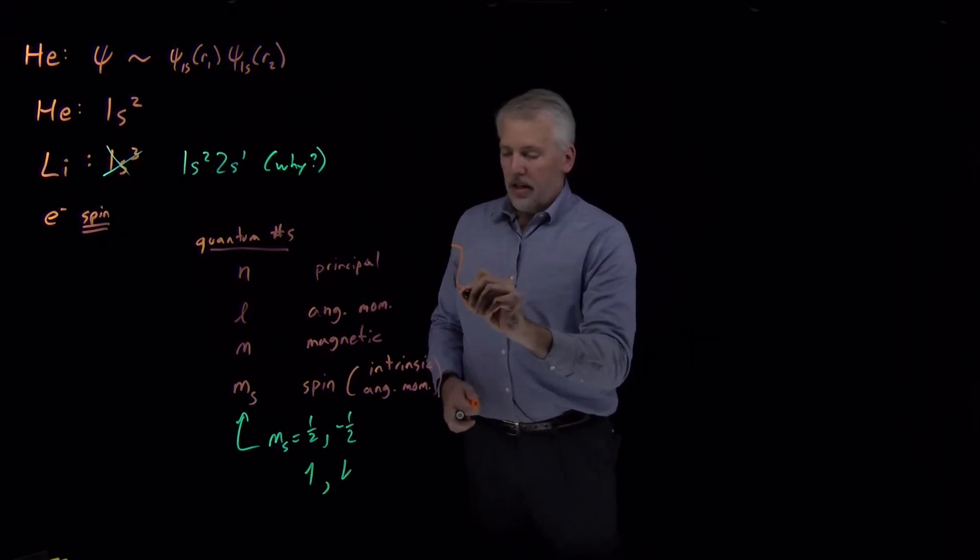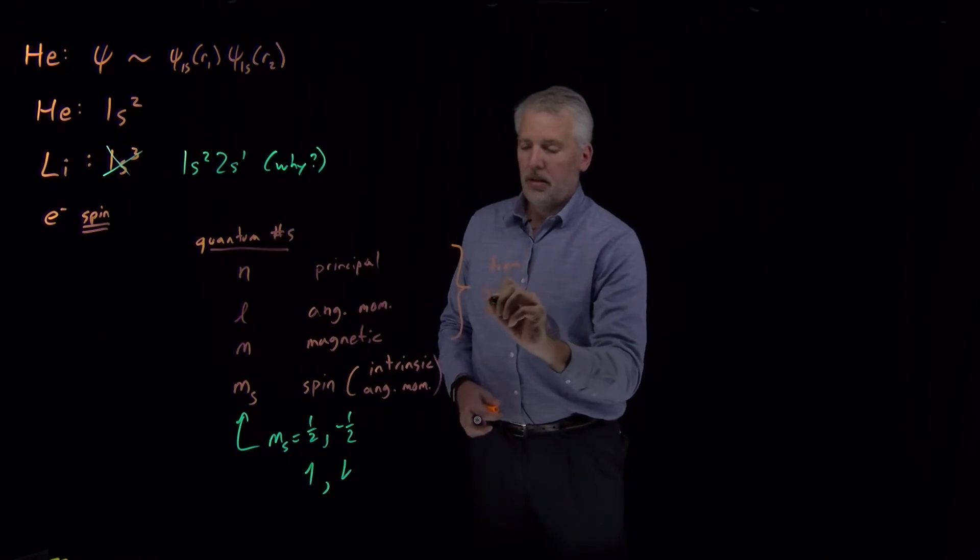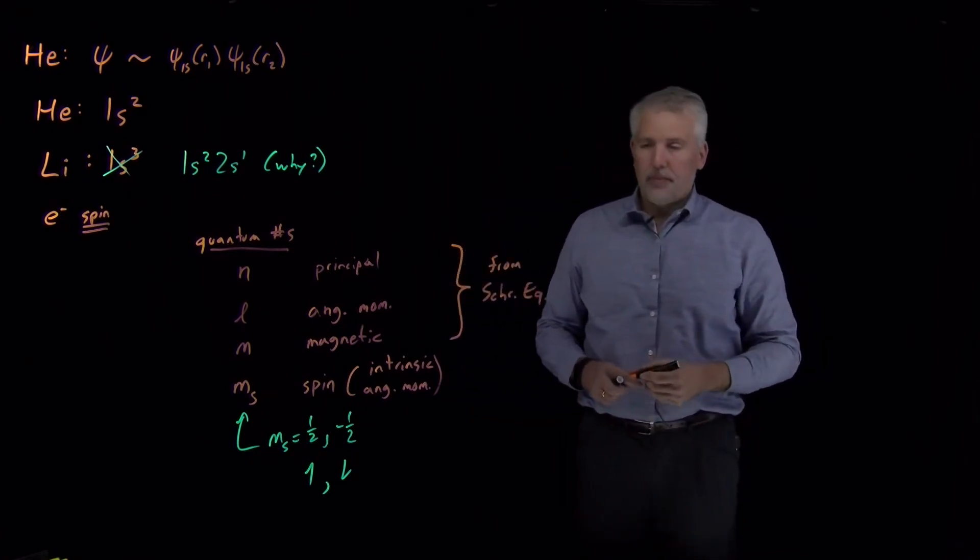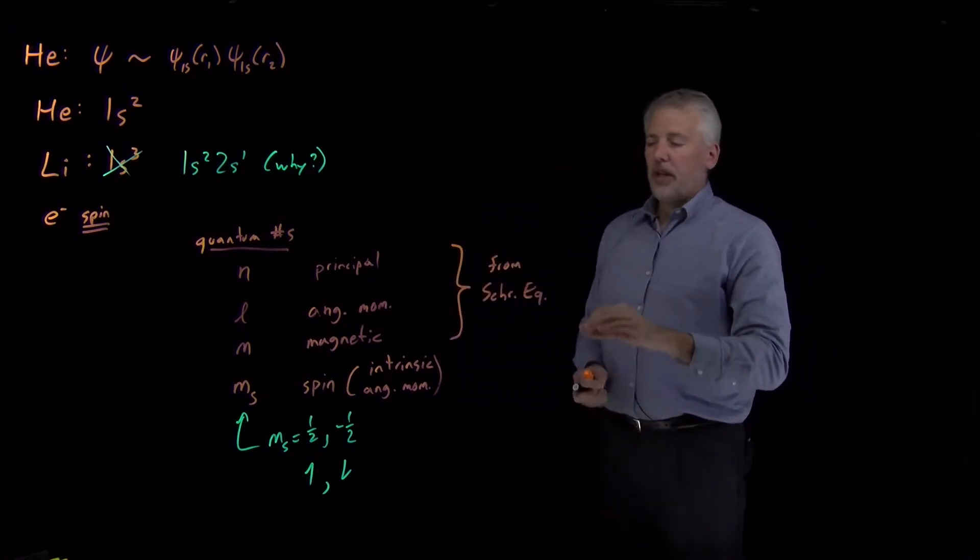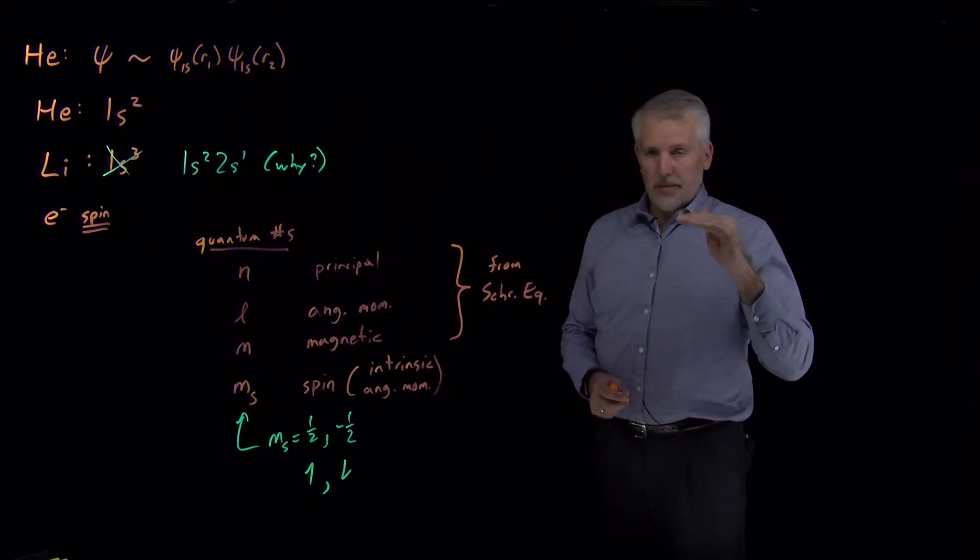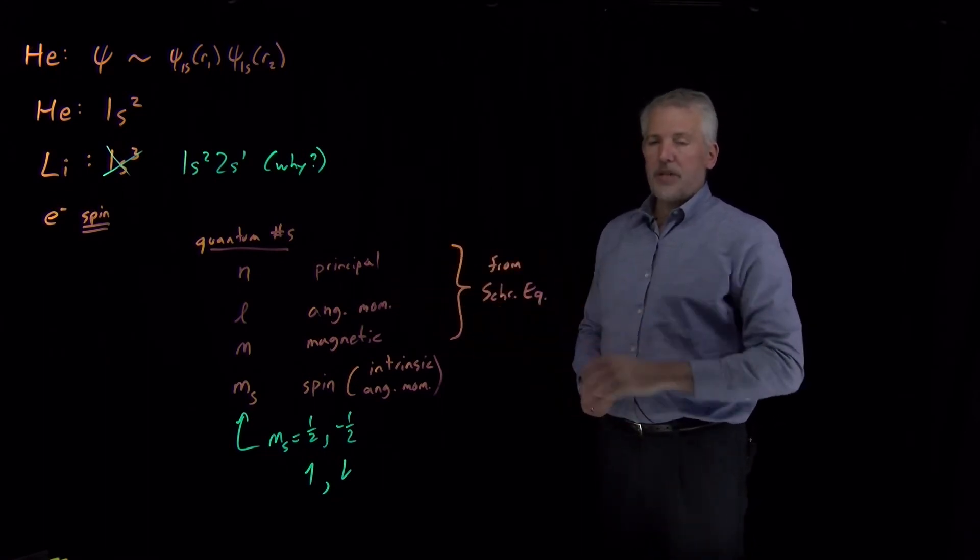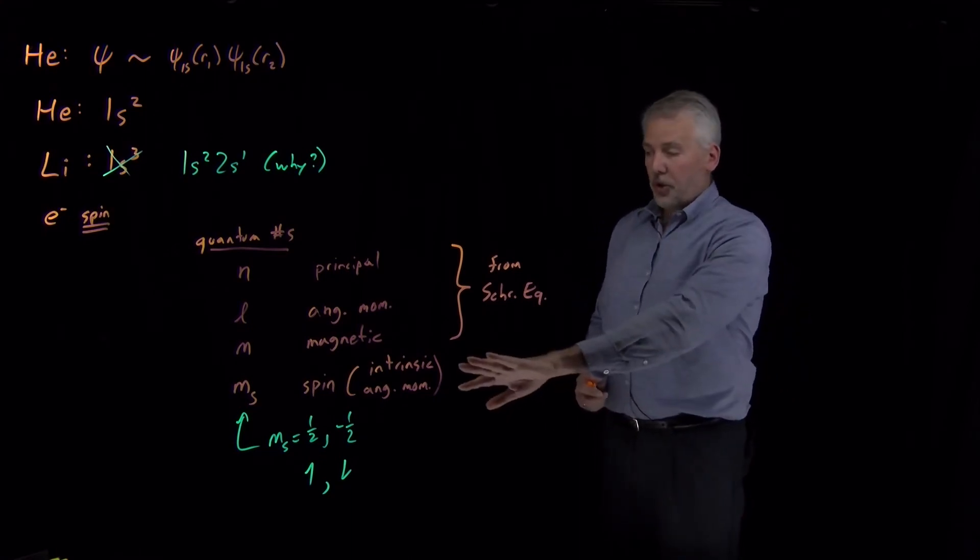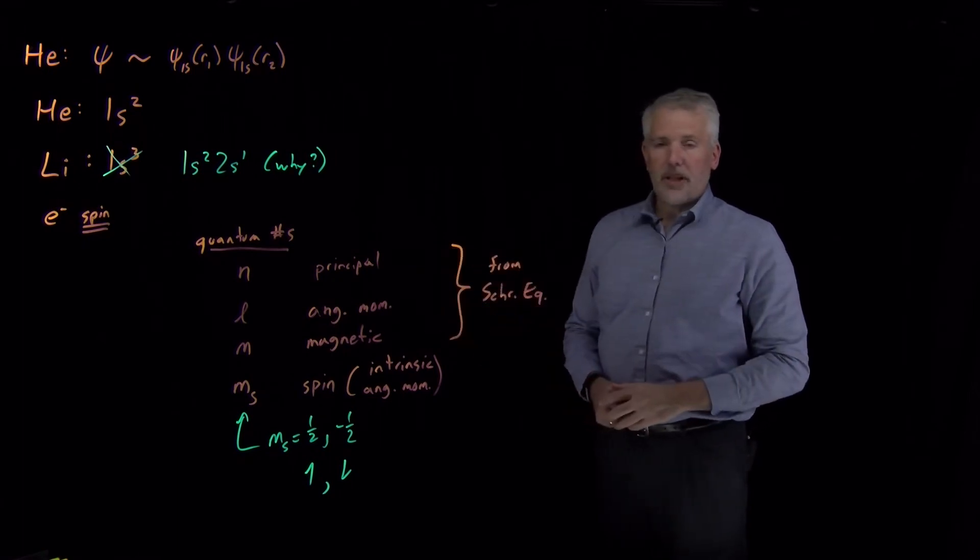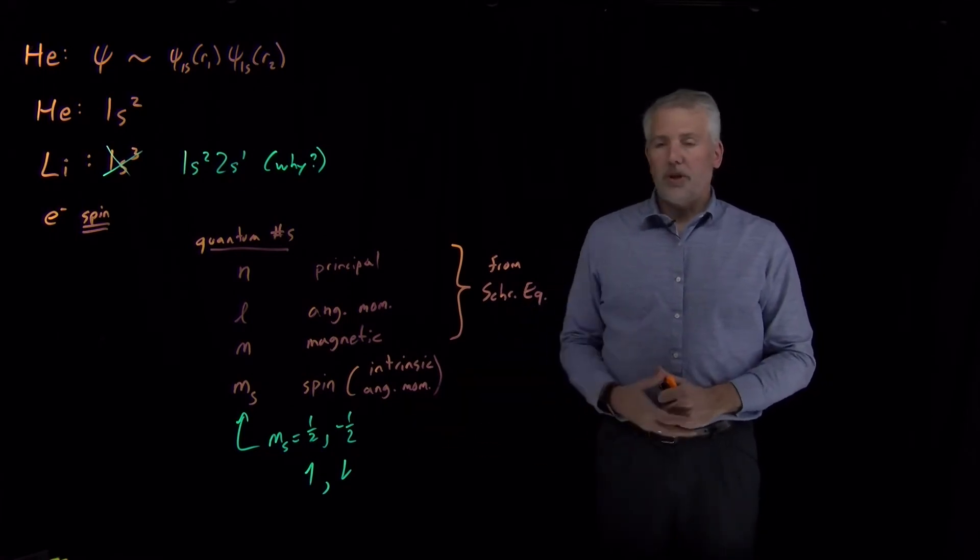The origin of these first three quantum numbers—n, l, and m—we've seen where they came from in a fair amount of detail when we solved Schrödinger's equation for the hydrogen atom. We discovered that there were certain families of solutions, certain values of these integer quantum numbers that arose naturally from solving Schrödinger's equation. I've just told you that electrons have spin, and just like n, l, and m can only have certain integer values, the spin can only have these two half-integer values.